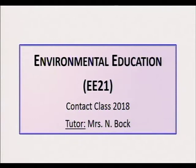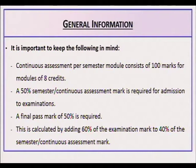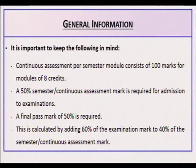General Information: It is important to keep the following in mind. Continuous Assessment — per semester, a module consists of 100 marks for modules of 8 credits. A 50% semester or continuous assessment mark is required for admission to examinations. A final pass mark of 50% is required, calculated by adding 60% of the examination mark to 40% of the semester or continuous assessment mark.